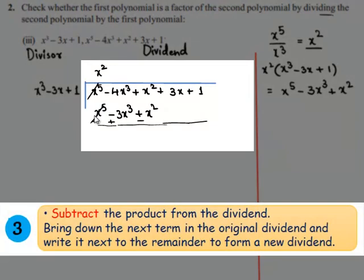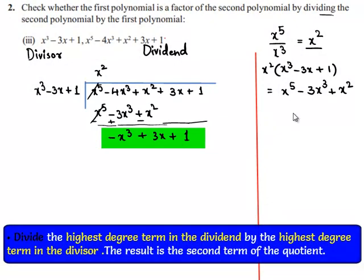x⁵ and -x⁵ cancel; -4x³ + 3x³ gives -x³; x² and -x² cancel. This gives the new dividend as -x³ + 3x + 1. This new dividend has the highest degree term -x³ and the highest degree term of the divisor is x³.